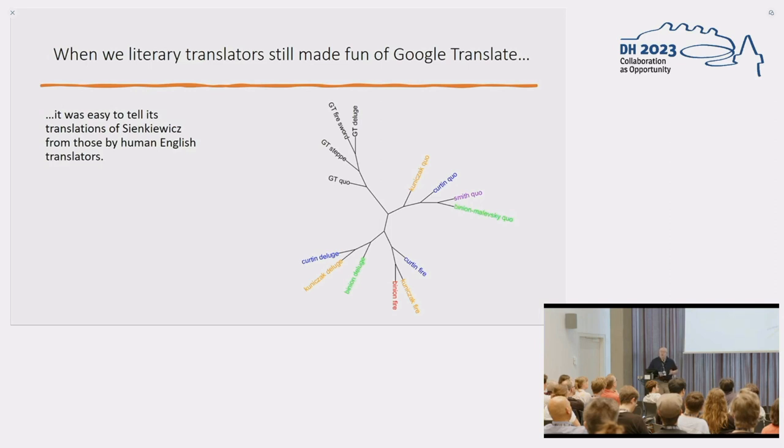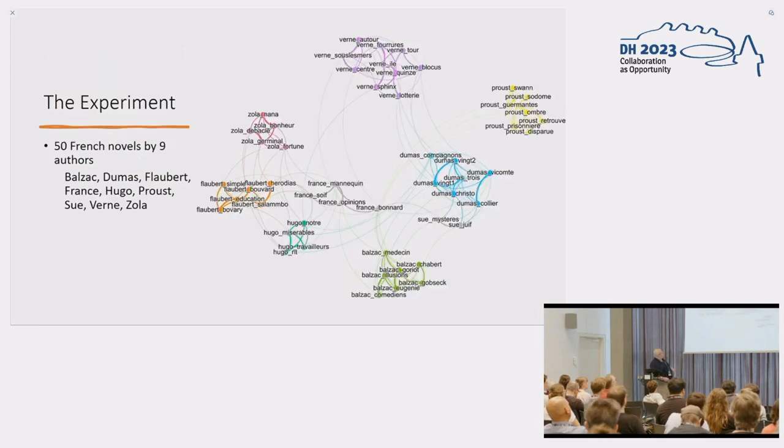But now, of course, machine translation went neural network and deep learning. So it was time to make a slightly more serious experiment. I'm only presenting results for English and French. Polish was also part of it, but we don't have time for that. Here's the experiment. I took 50 classic French novels by nine authors. You can see them here. And in our network analysis, they all cluster very nicely. Balzac is Balzac, Dumas, Proust. These are the originals, of course. That's what was to be expected. Authorship attribution works.